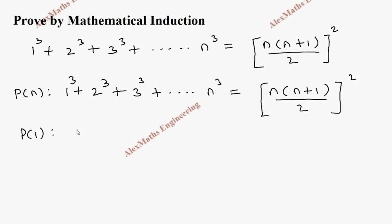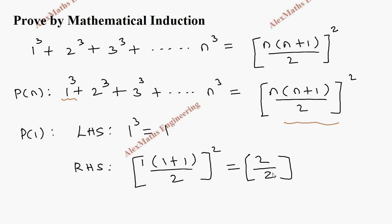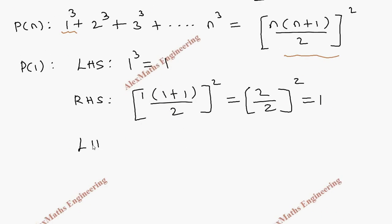Now we are going to find P of 1. For P of 1, we first take the LHS: P of 1 means the first term alone, that is 1 cube, which equals 1. For the right hand side, we substitute n equals 1: 1 times (1 plus 1) divided by 2, whole square. The numerator is 2, denominator is 2, so 2 by 2 equals 1 squared, which is 1.